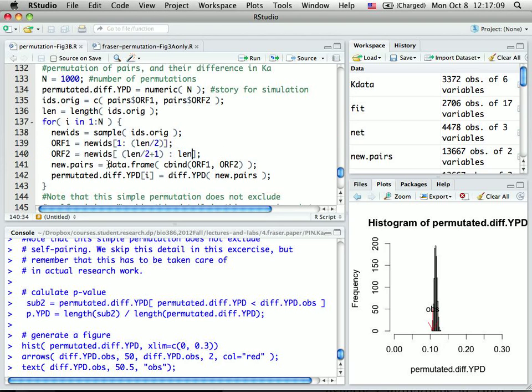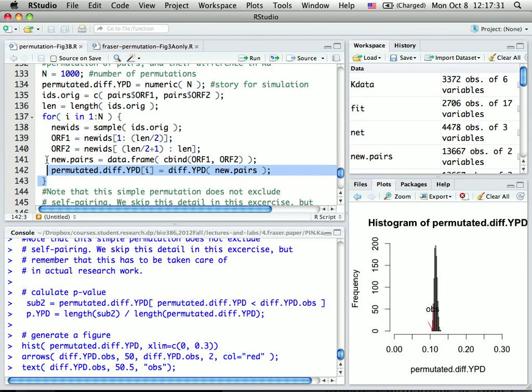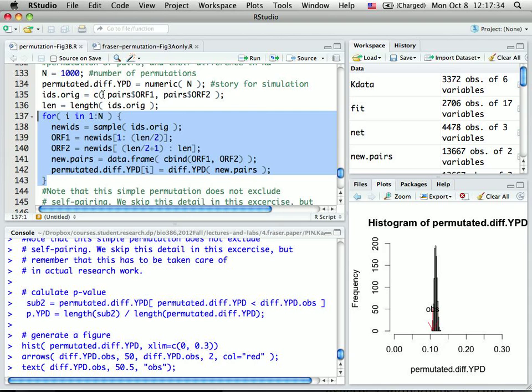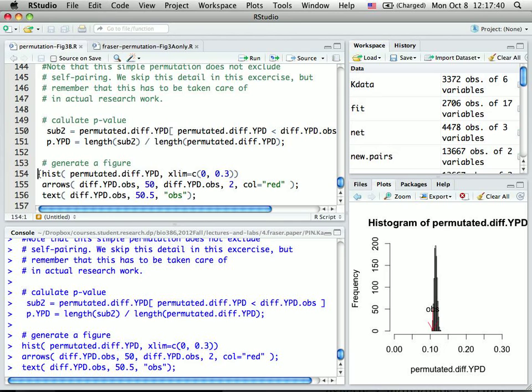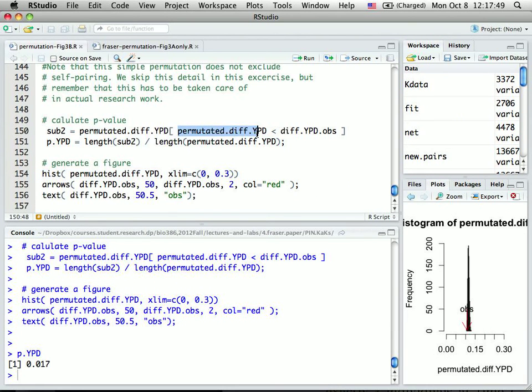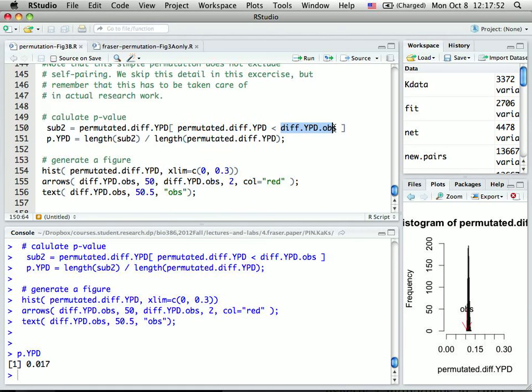And then, put this into a data frame. I call that new pairs. And then call my diff.ypd function again. Remember, that's one calculation. So I assign it by the bracket i, all this is just one simulation. I simulate this 1000 times. And the histogram of this simulation will be basically the null distribution. And all I need to find out is how many of my simulated ones are more extreme than my observation here.